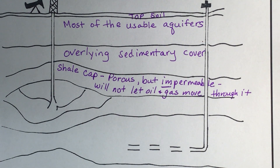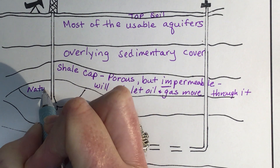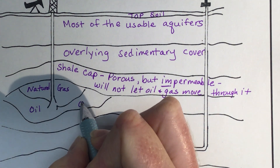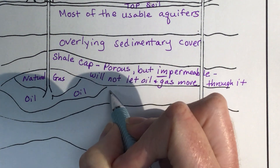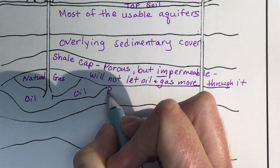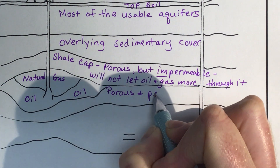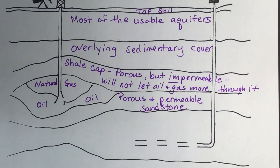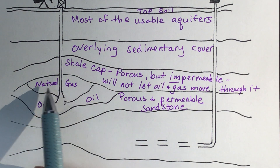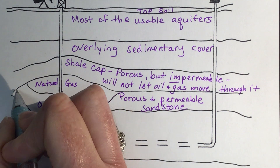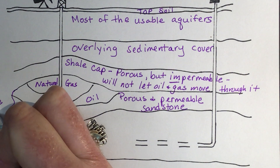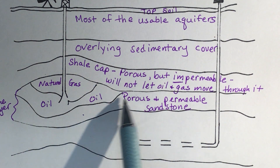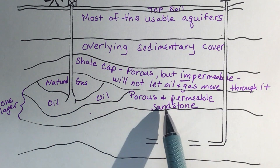Now let's talk about where our oil and gas are. In this layer we have our natural gas, and below it we have our oil. Below that we have our sandstone, which is porous and permeable. The natural gas, oil, and sandstone are all one layer — the oil and natural gas are found within the sandstone.